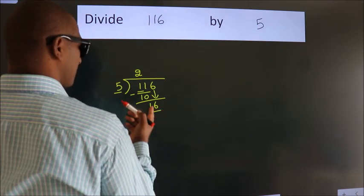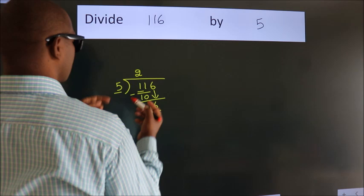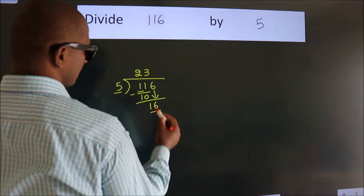So, 16. A number close to 16 in the 5 table is 5 times 3 equals 15.